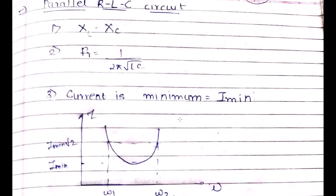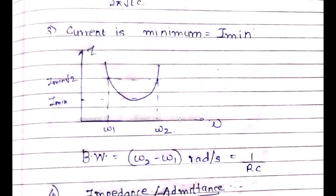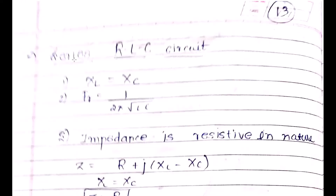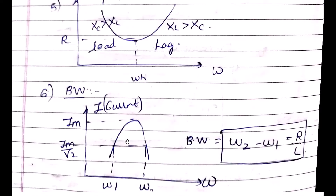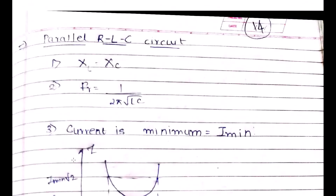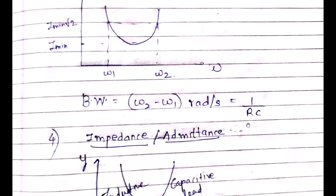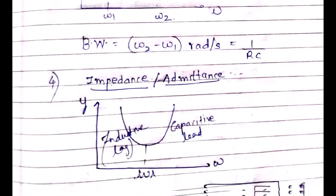For the parallel RLC circuit, XL = XC and fr = 1/(2π√LC) just as in the series case. However, unlike the series RLC circuit where current was maximum at resonance, in the parallel RLC circuit the current is minimum at resonance — I_minimum. At the 3 dB bandwidth frequencies ω1 and ω2, the current is I_minimum × √2. The bandwidth for the parallel RLC circuit is given as 1/(RC), that is ω2 − ω1.